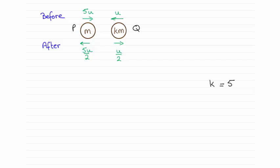The first thing you need to do is sketch a diagram. It's a very standard type of diagram. It will look something like this. We've got our particles p and q. We're told that they've got masses of m and km respectively.